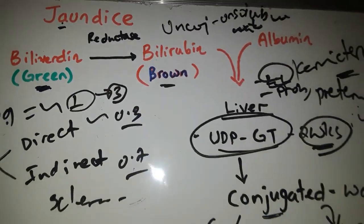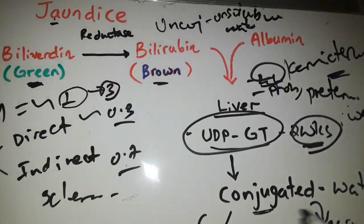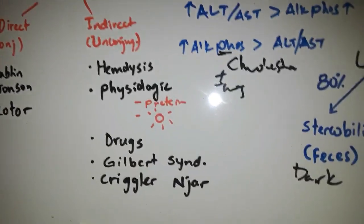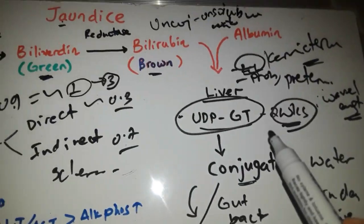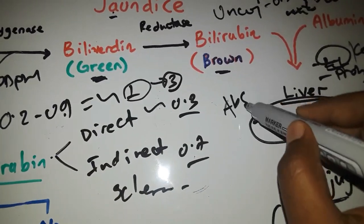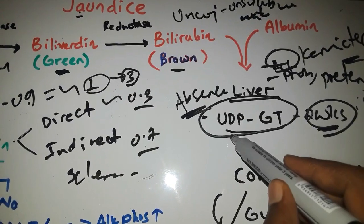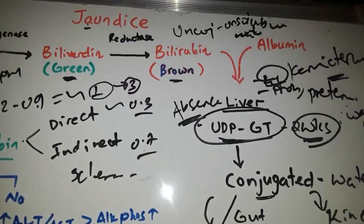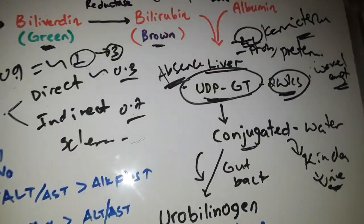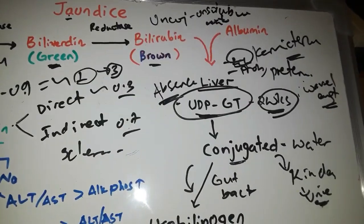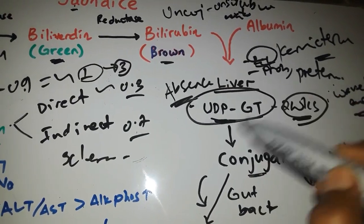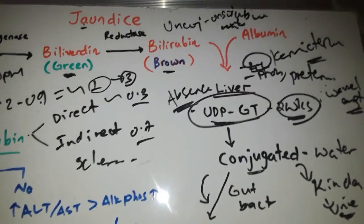Other causes include Gilbert syndrome and Crigler-Najjar syndrome, which both involve UDP-glucuronyl transferase defects. Gilbert syndrome is a milder form with mild UDP-glucuronyl transferase dysfunction. Crigler-Najjar syndrome involves an absence of UDP-glucuronyl transferase. There are subtypes — type 1 and type 2. When liver conjugation enzyme is absent, it is called Crigler-Najjar syndrome.